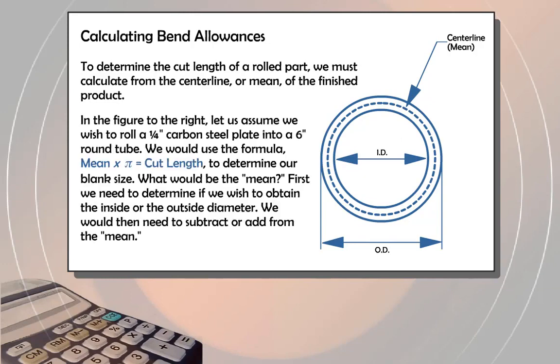In the figure to the right, let us assume we wish to roll a ¼-inch carbon steel plate into a 6-inch round tube. We would use the formula mean times pi equals cut length to determine our blank size.